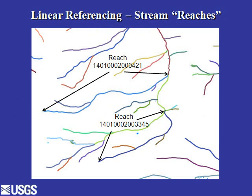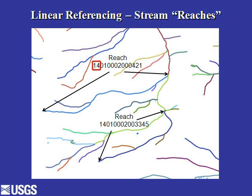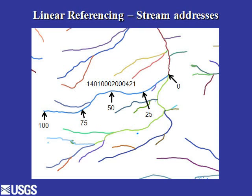We identify every stream segment with an identifier called a reach code — a 14-digit number. The first eight digits tell us the hydrologic unit. For example, hydrologic unit 14 is the Upper Colorado River, hydrologic unit 1 is the Colorado Headwaters, and 02 is the Blue River. Every stream segment in the United States has such an identifier, so even if a stream has no name, we still have a way of identifying it. We also divide each reach into an address range from zero at the downstream end to 100 at the upstream end, equally divided regardless of the stream's length or sinuosity.